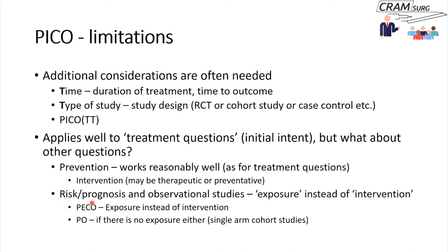The next category of questions would be questions relating to risk — risk of a particular disease, prognosis, and observational studies in general. In risk and prognosis studies, you do not have any intervention, but you have what we call exposure. So it can be quite straightforward — you simply swap exposure instead of the intervention. For example, if you're looking at smoking and bowel cancer, smoking would be your exposure, people who don't smoke would be the controls, and the occurrence of bowel cancer would be the outcome.